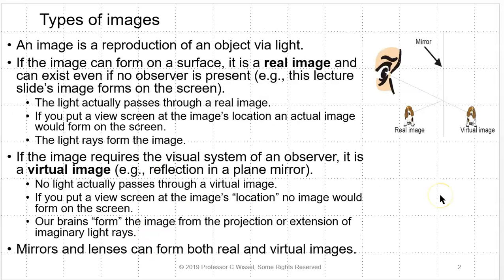Remember there are two basic types of images. One is a real image. A real image is one where the light will actually pass through it. If you put a view screen at the image's location, you'll actually see an image forming on the screen. The light rays form the image, and real images are typically upside down or inverted.